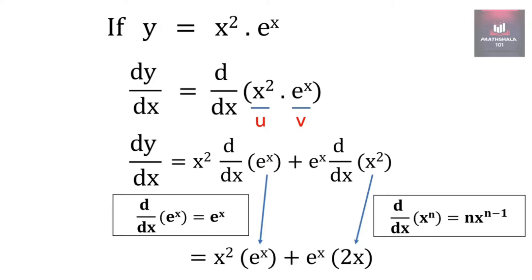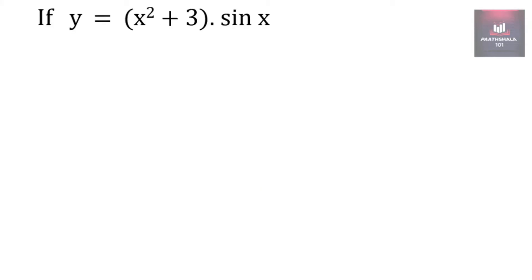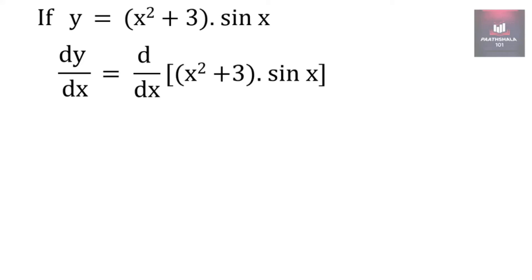Let us proceed to another example. Suppose y is x square plus 3 into sin x. We can take x square plus 3 as an entire unit, that is u, and sin x as v. So if we take the derivative of y with respect to x, it will be the derivative of the right hand side, that is x square plus 3 into sin x. We are taking x square plus 3 as u and sin x as v.